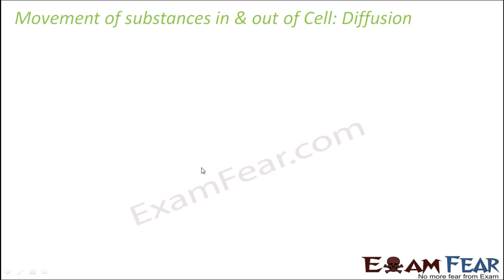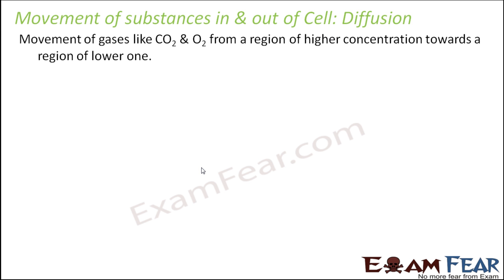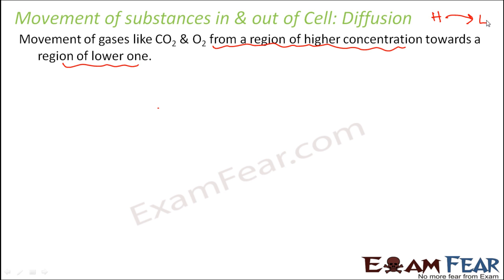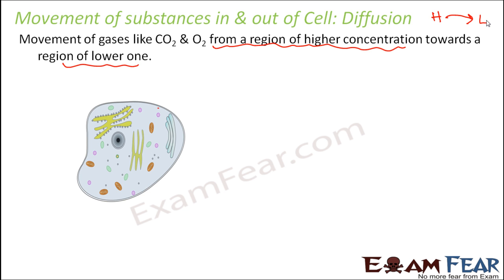Let us see how movement of substances takes place across the cell membrane by the process of diffusion. Diffusion is the movement of particles or gases like carbon dioxide and oxygen from a region of higher concentration towards a region of lower concentration. Diffusion always takes place from higher to lower concentration. For example, if oxygen is the gas moving, wherever more oxygen is present is the region of higher concentration, and it will move toward where less oxygen is present.